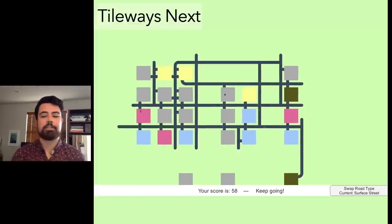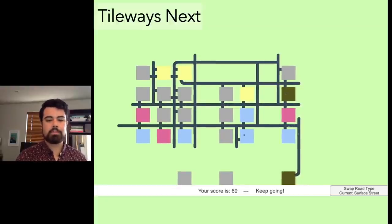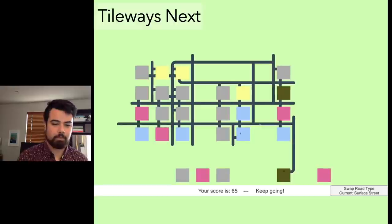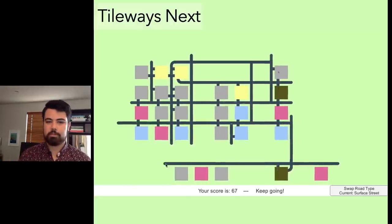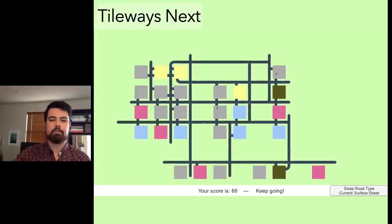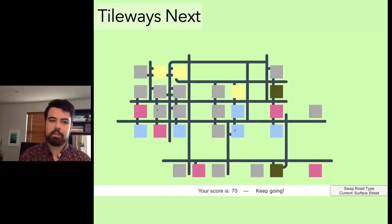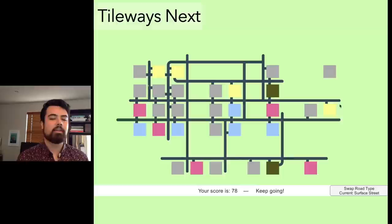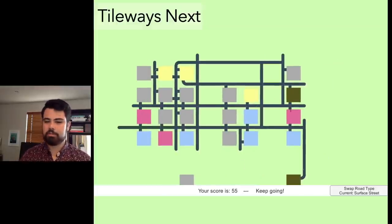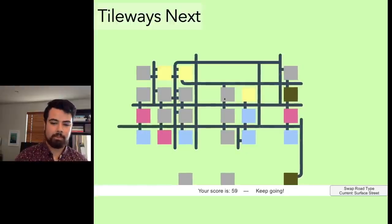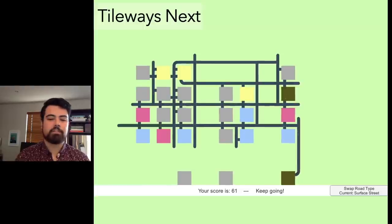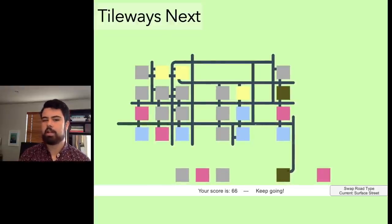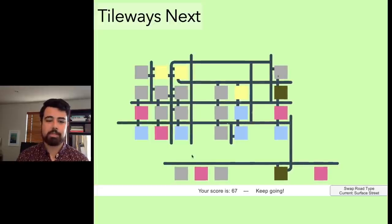The Tileways prototype spawned a bunch of different variations. This one was called Tileways Next, and the idea was that the roads and the buildings were on separate grids. One of the things we want is that you to be able to delete your entire network and start again. Ultimately, this prototype just felt awkward.